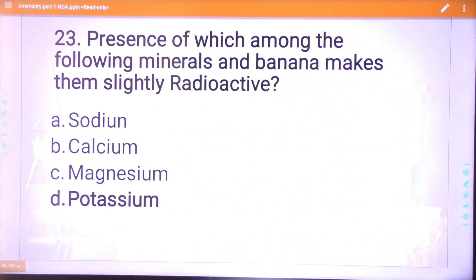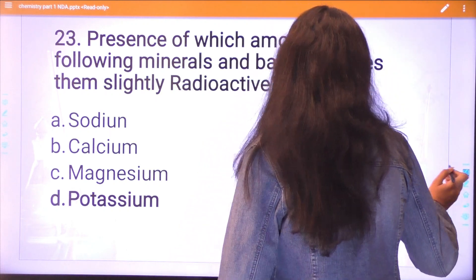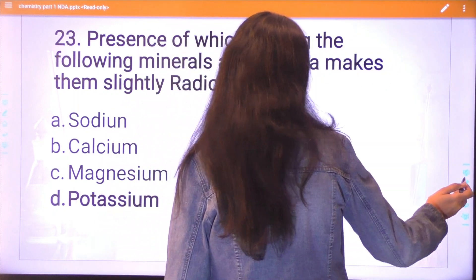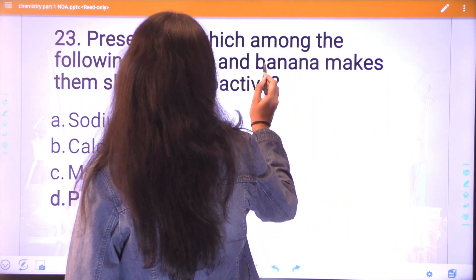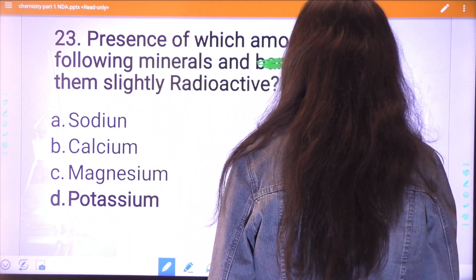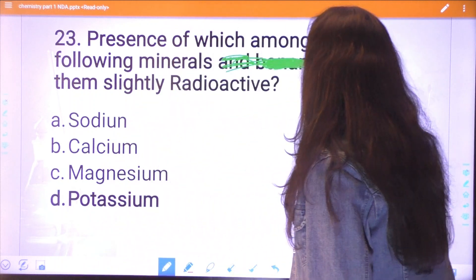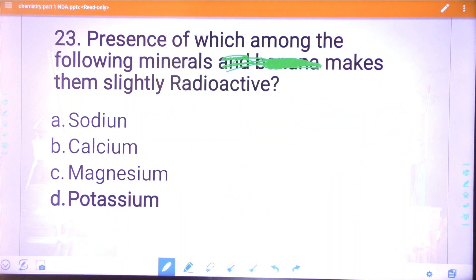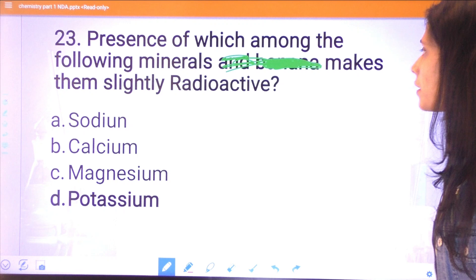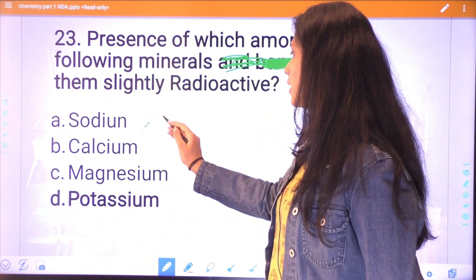Question twenty-three: presence of which among the following minerals in banana makes them slightly radioactive? From sodium, calcium, magnesium, or potassium, potassium is the correct answer. Potassium is the most radioactive.